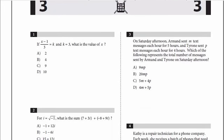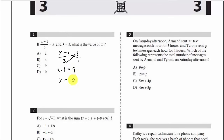Problem number one: if x minus 1 over 3 is equal to k, and k equals 3, what is the value of x? We're plugging 3 in for k, so x minus 1 over 3 equals 3. Multiply both sides: x minus 1 equals 9. Add 1 to both sides: x equals 10. My answer is D.